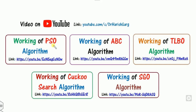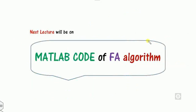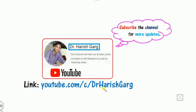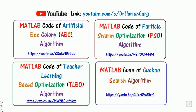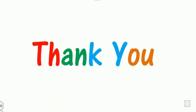This is the simple working procedure of the Firefly algorithm. If you want to compare its performance with PSO, ABC, TLBO, and other algorithms on the same objective function, you can watch those videos for a better understanding, or follow the link to find all related videos. We will meet in the next lecture on the MATLAB code of the Firefly algorithm. If you missed any videos on evolutionary algorithms, browse the link, subscribe to the channel, share the videos, and find the MATLAB code for PSO, ABC, TLBO, and Cuckoo Search at the same link. Happy learning!